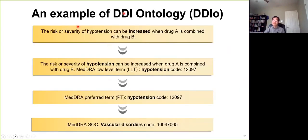So here, I'll give you a quick example with the DDIO. You can see this is one DDIO type: the risk or severity of hypertension can be increased when drug A is combined with drug B. So we get the MedDRA coding for the low-level term, hypertension, and then map to the PT level. The rationale behind the PT level is that a lot of pharmacovigilance, especially in the FDA, uses the MedDRA PT coding, such as the FAERS database and the FDA labels, which allow you to link to other resources.